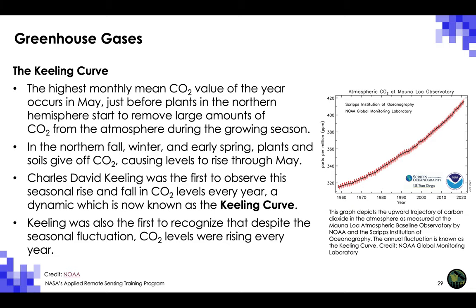The atmospheric burden of carbon dioxide is now comparable to where it was during the Pliocene climatic optimum between 4.1 and 4.5 million years ago, when CO2 was close to or above 400 parts per million. During that time, sea level was about 78 feet higher than today, the average temperature was 7 degrees Fahrenheit higher than in pre-industrial times, and large forests occupied areas of the Arctic that are now tundra. The graph on the right depicts the upward trajectory of carbon dioxide as measured at the Mauna Loa Atmospheric Baseline Observatory by NOAA and the Scripps Institution of Oceanography.